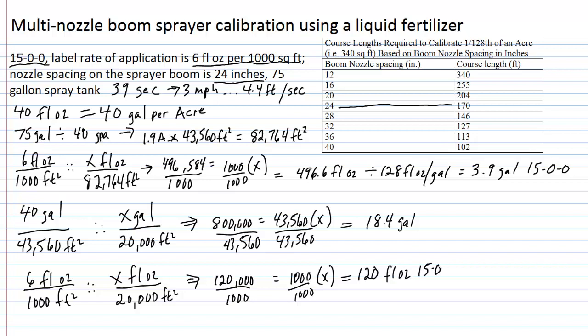And we get 120 fluid ounces as our answer, and that's of 15-0-0. And, again, if you want to determine how much that would be in terms of a gallon, 120 fluid ounces divided by 128 fluid ounces that are in a gallon, and this is a little bit less than one. It's approximately 0.94 gallons. In a real-world practical application, you probably would take one gallon of material and add it to the tank and bring the final volume up to roughly 18.5 gallons, and you would be delivering right at 6 fluid ounces of 15-0-0 per 1,000 square feet.